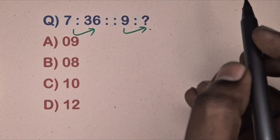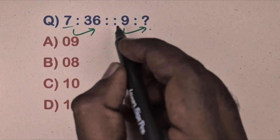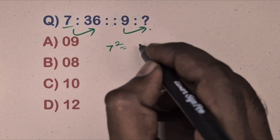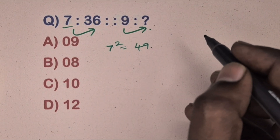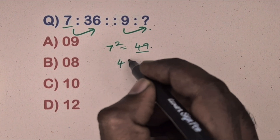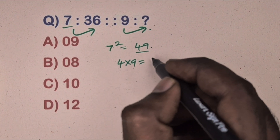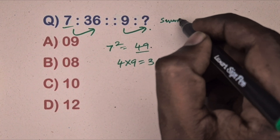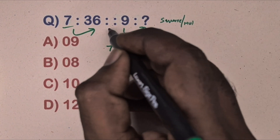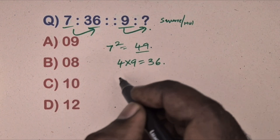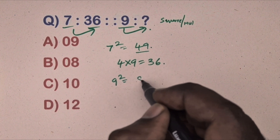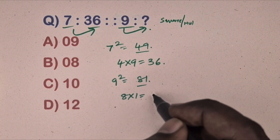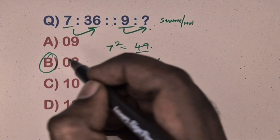Next question: seven is related to 36, nine is related to which number. Take seven, seven squared equals 49, multiply the digits: four times nine equals 36 — this is the square and multiplication relation. Same way, nine squared equals 81, multiply the digits: eight times one equals eight. Option B is the correct answer.